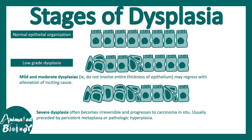There is normal epithelial organization, low-grade dysplasia, and high-grade dysplasia. In mild to moderate dysplasia, the situation can still be improved. However, severe dysplasia often becomes irreversible and can mostly progress to carcinoma development — it is essentially a detrimental end stage.